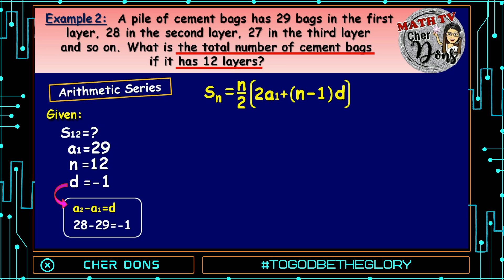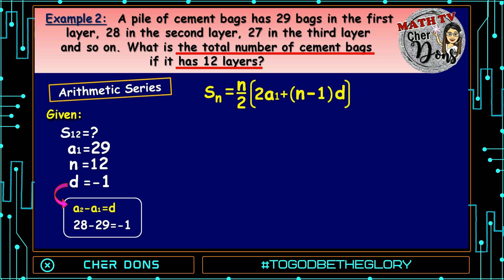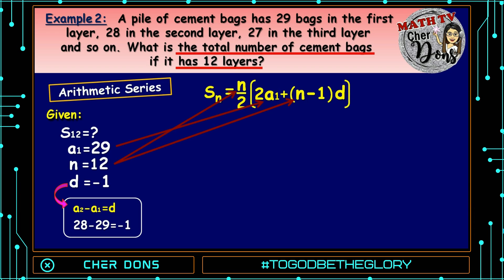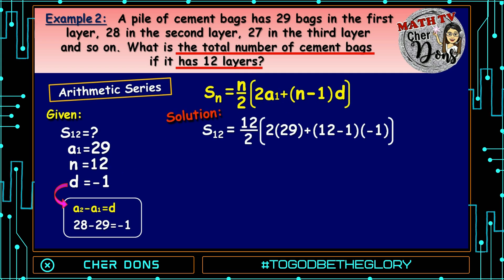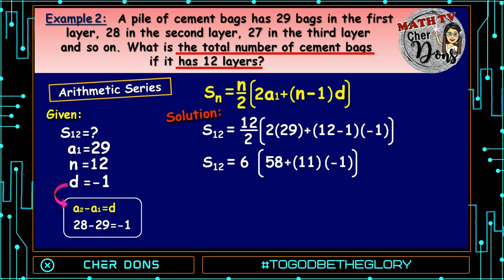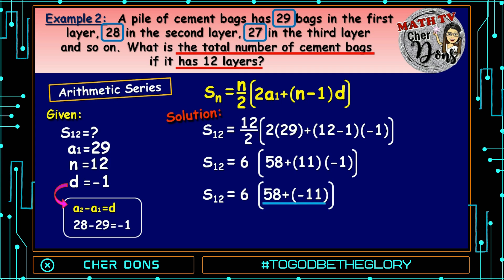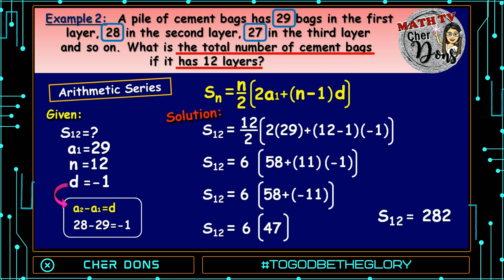Applying the formula: S sub n is equal to n over 2 multiplied by 2 times A sub 1 plus quantity n minus 1 multiplied by d. Where 29 goes to A sub 1, 12 goes to n, and negative 1 goes to d. S sub 12 equals 12 over 2 multiplied by 2 times 29 plus quantity 12 minus 1 multiplied by negative 1. 12 divided by 2 equals 6; 2 times 29 is 58; and 12 minus 1 is 11. So S sub 12 equals 6 multiplied by 58 plus 11 times negative 1, which equals negative 11. Then 58 plus negative 11 equals 47, so S sub 12 equals 6 times 47, which equals 282.